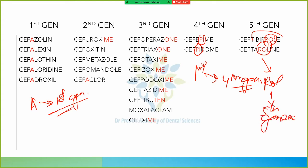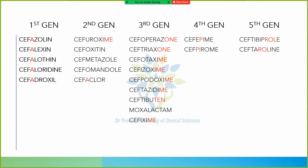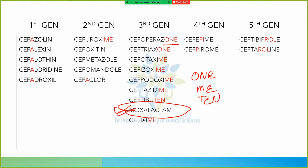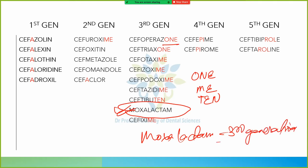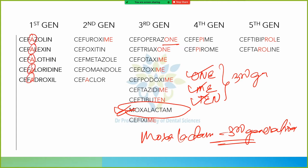For the third generation, the drug names contain 'one,' 'me,' or 'ten.' There is an exception — moxalactam, which you have to remember separately as third generation. However, there are exceptions: in the second generation, we find a drug with 'a' — cefaclor — so cefaclor is an exception you must remember.